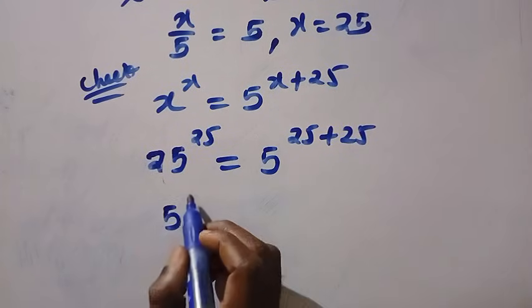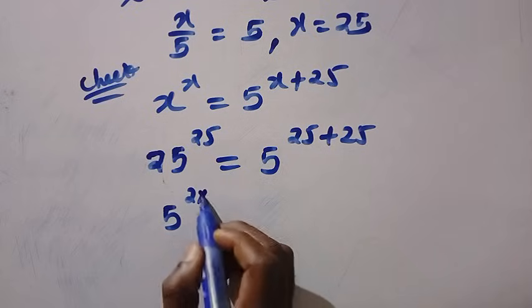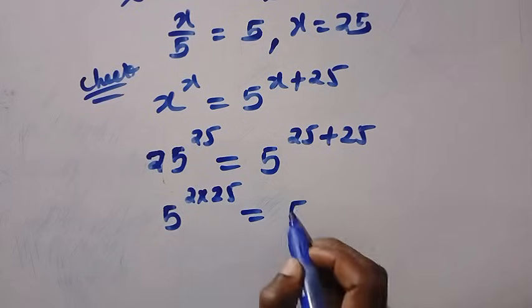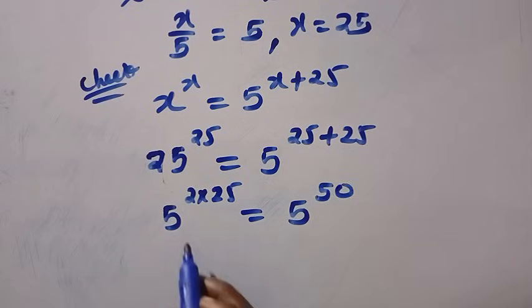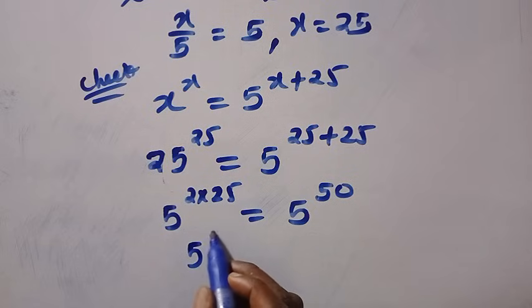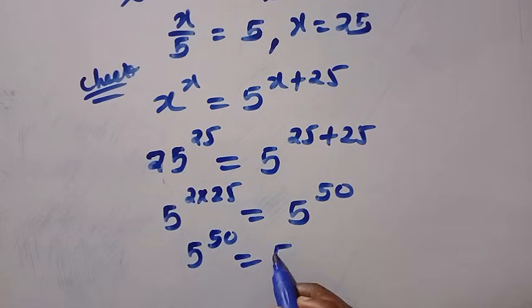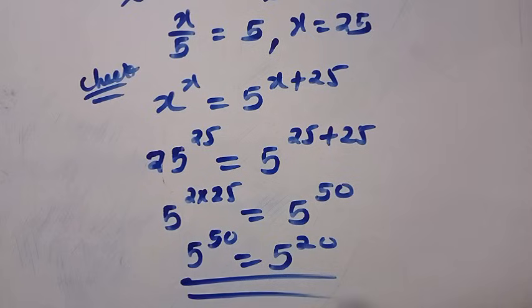So here we have 5 raised to power 2 times 25 equals 5 raised to power of 50. So 5 raised to power 2 times 25 that is 5 raised to power of 50 equals 5 raised to power of 50. So this is correct.